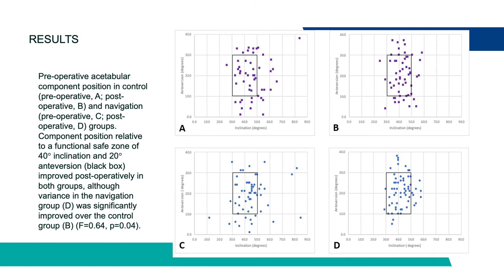Here we have our scatter plots showing pre- and postoperative scattergrams for both the control groups (A and B) and the navigation groups (C and D). A and C are preoperative; B and D are postoperative. When you compare B to D — B being the control group and D the navigation group — you can see a much tighter grouping of acetabular component position in the navigation group compared to the control group. This did reach statistical significance for anteversion.